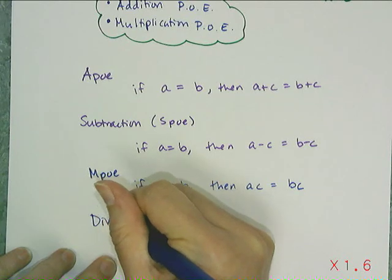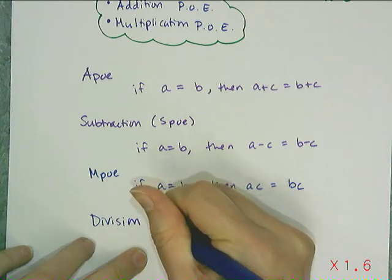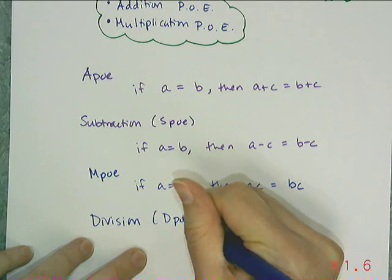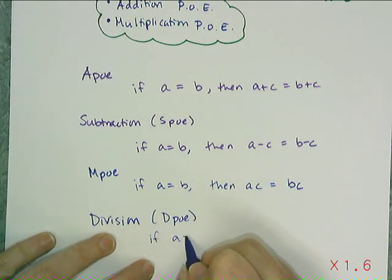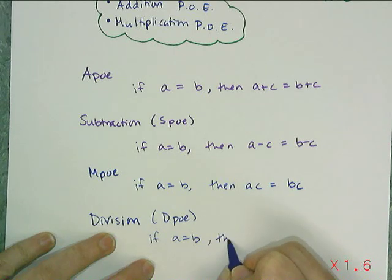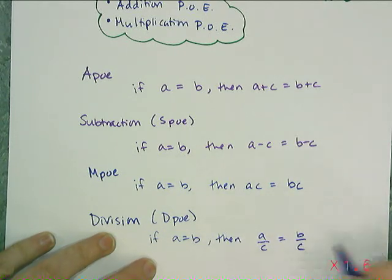And the last one is the division property of equality, which we're going to call DPO. And what DPO says is that if I have A equals B, then A over C equals B over C.